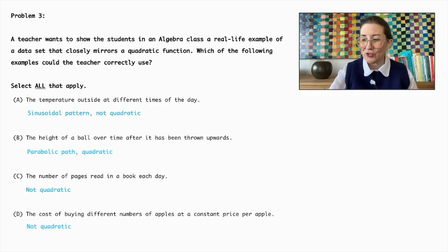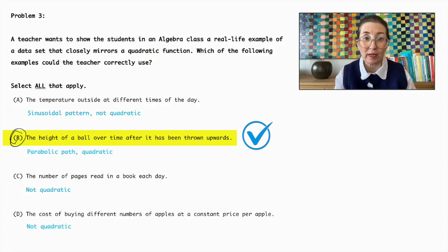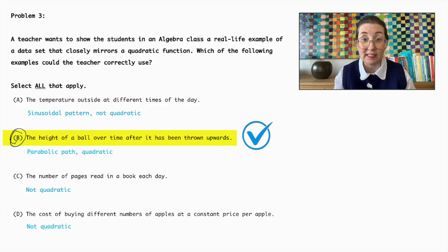The correct answer is Option B. The height of a ball over time after it has been thrown upwards is a classic real-life example of a quadratic function. This scenario demonstrates a parabolic path — the height increases to a peak and then decreases, forming a perfect quadratic curve due to the influence of gravity.